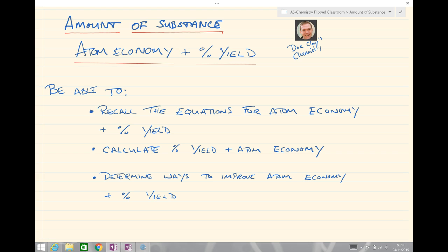So by the end of today's session you should be able to do the three following things. You should be able to firstly recall the equations for atom economy and percentage yield. You should be able to calculate percentage yield and atom economy. And finally we should be able to determine ways to improve atom economy and percentage yield.